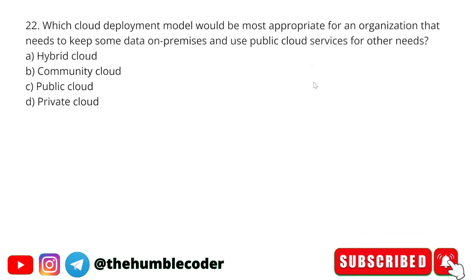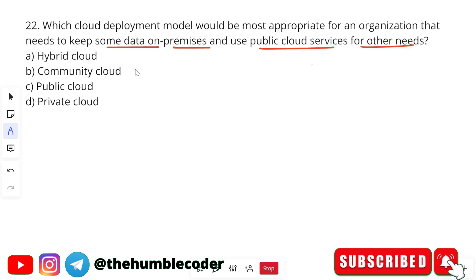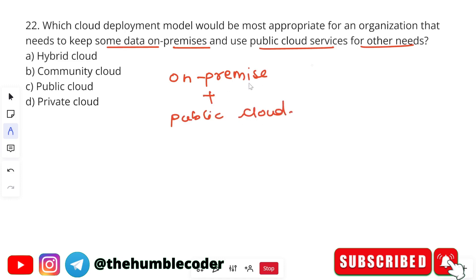Which cloud deployment model would be most appropriate for an organization that needs to keep some data on premises and use public cloud services for other needs? Options are hybrid cloud, community cloud, public cloud, and private cloud. The question specifies both on-premise data and public cloud services are needed, so when both are required, the answer is option A — hybrid cloud.